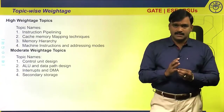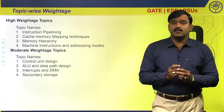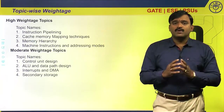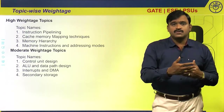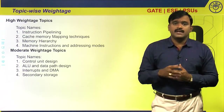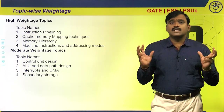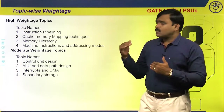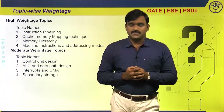In instruction pipelining, concentrate on the hazards — data hazards, control hazards, and memory hazards. Also focus on finding the number of clock cycles required to execute given instructions. An instruction type and description will be given; you need to find out the total cycles required. Similarly, there are questions related to finding the throughput of a pipelining system.